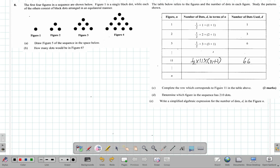All right, just in case we need them, we know that the answer for part D was figure 20, which has 210 dots from what we did earlier. Now write a simplified expression.